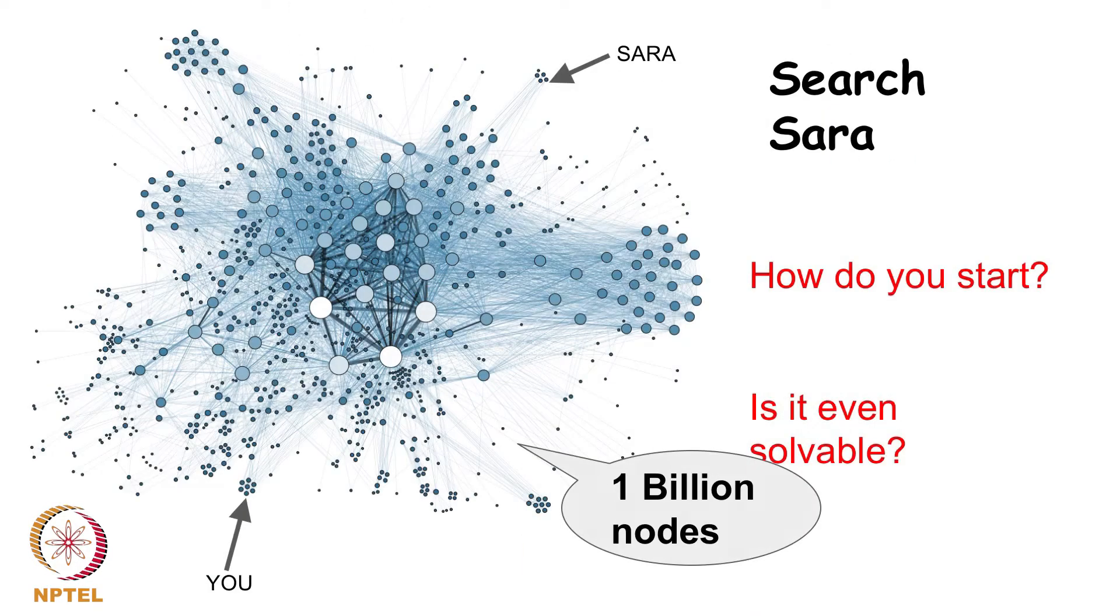I told you there are so many possible networks that one can think of on even a 15 node graph, and I am giving you a 1 billion node network. How can you search for a node here?